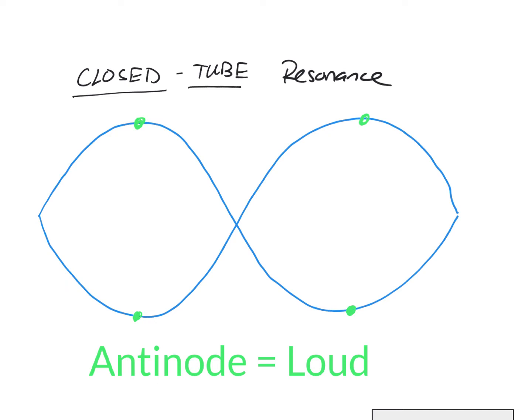However, the nodes here, here and in the beginning will actually deaden the sound and you would hear a lower volume of sound at that spot on the wave. So how do we change these spots? If we know that the anti-nodes are what we're going to be looking for, if those produce the rapid resonance, how do we adjust for that?